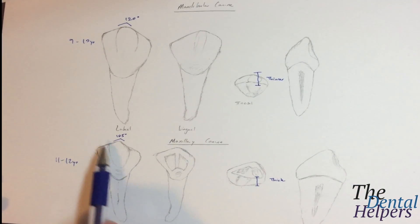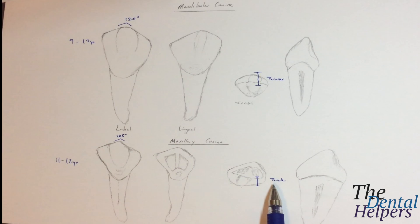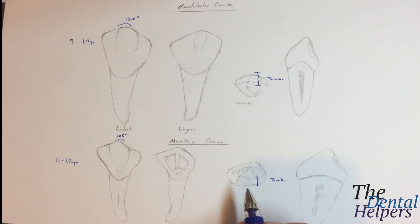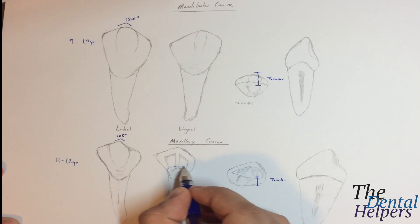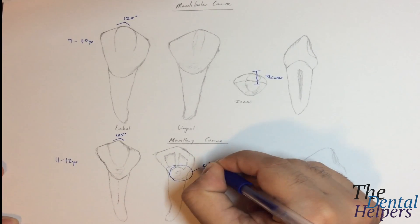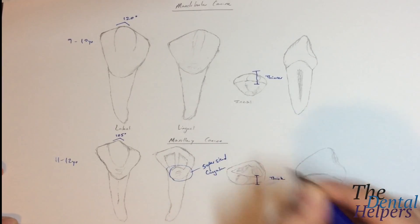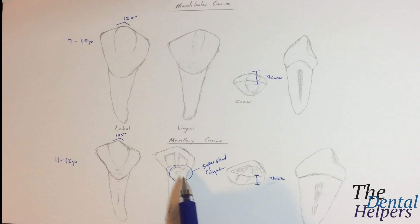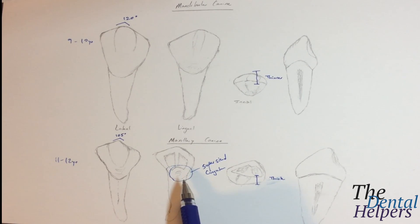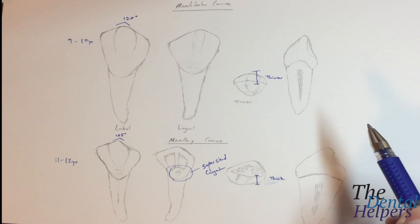So recap: the maxillary canine is sharper and thicker. The next big thing for tooth ID is to look for the supersized cingulum. In the maxillary canines, the cingulum is going to be supersized — significantly larger than the mandibular cingulum, which isn't really going to be as easy to notice.